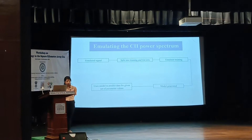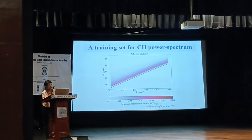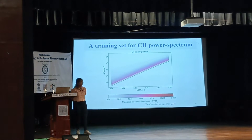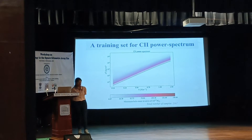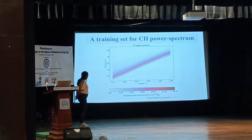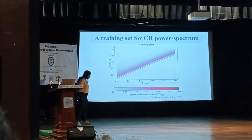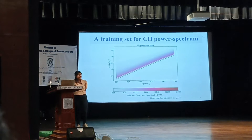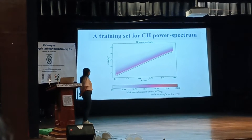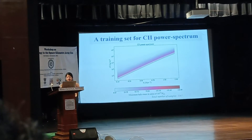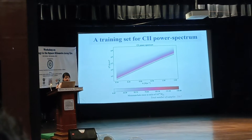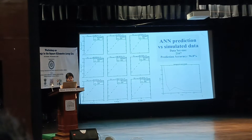This is for the CII power spectrum, which we picked up first. This is what the training set looks like — it has 2,157 samples, so there are 2,157 individual sets of power spectra. What is happening here is that we are changing the minimum halo mass from one power spectrum to the next. For every line that you see, there is a different minimum halo mass. This data set is split into training and testing sets, which will be used for training the emulator.